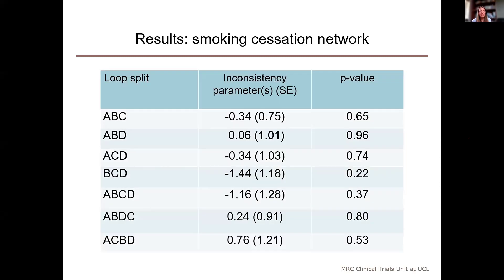I've started by fitting separate models to check for local inconsistency within individual loops. In the ABC loop, for example, we estimate the inconsistency parameter as minus 0.34 with a standard error of 0.75. The p-value is 0.65, and there's no evidence of inconsistency in the ABC loop. I've shown results for all seven possible loops in the network, and we find no evidence of inconsistency in any of them.